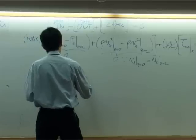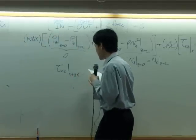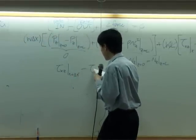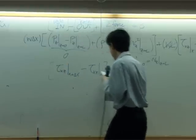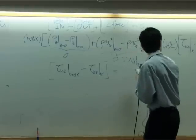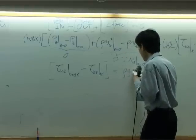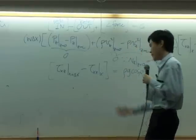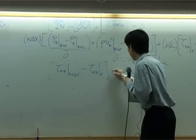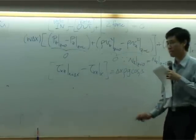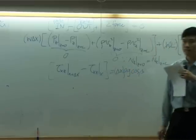If I bring these two terms to the right hand side, it will start by tau xz at x minus tau xz at x equal to rho G cosine beta delta X. Right?